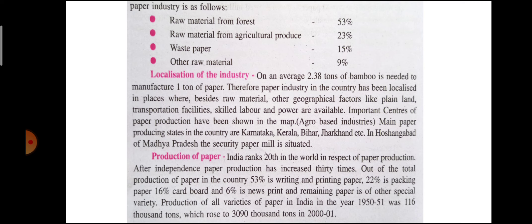It is clear that any type of industry is established at a place where its raw material is easily available. The important centers of paper industries and paper production can be seen on the map. The main paper producing states include Karnataka, Kerala, Bihar, Jharkhand, etc.